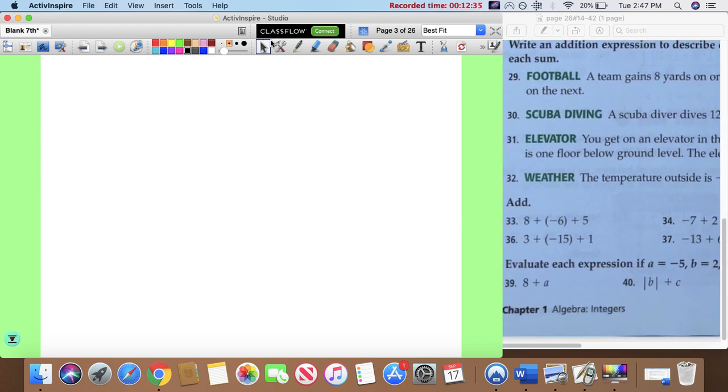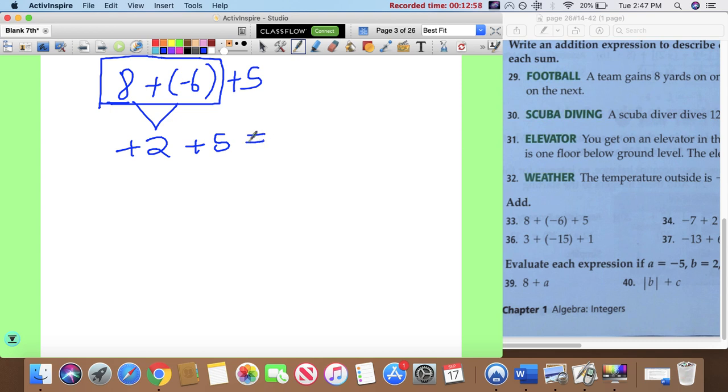Thirty-three: eight plus negative six plus five. Primero vamos a hacer estos dos. Eight plus negative six is going to be positive. There's more positives. How many more? Dos más. We get two. And then plus five. Two plus five is seven. So, la respuesta final es siete.